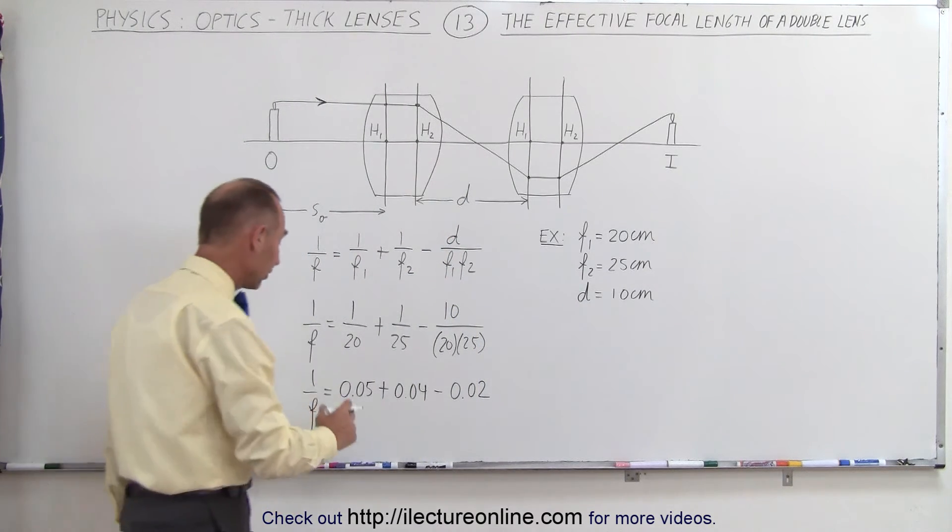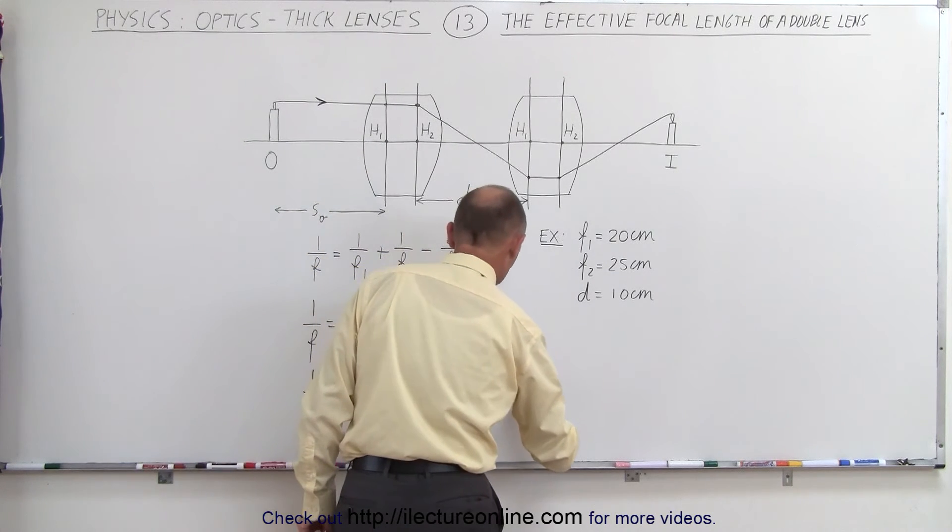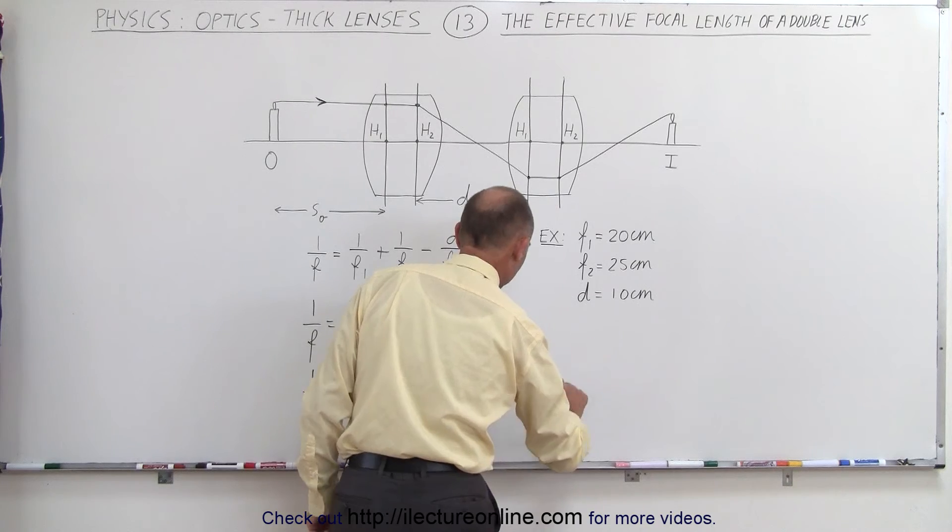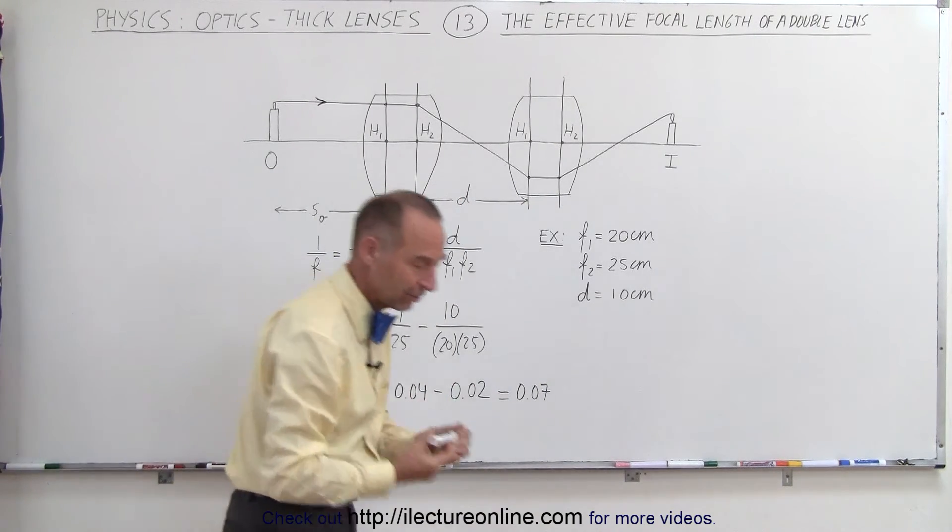So now simply adding those together, this is equal to 0.09 minus 0.02 or 0.07, and of course remember we need to take the inverse of that, so let's do that.